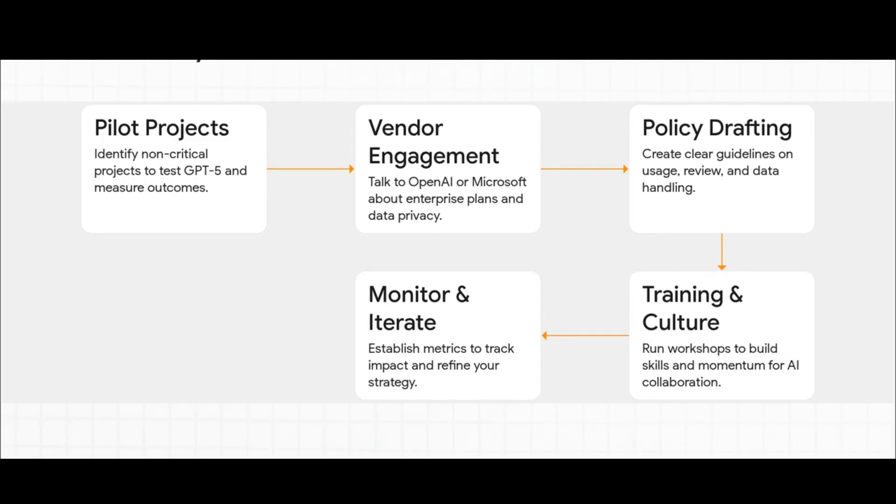So here's a simple five-step playbook for any executive who's looking to lead this charge. You start small with pilot projects to prove the value. Then, you engage vendors on security and privacy. From there, you draft policies so everybody's on the same page. Then, you invest in training to build the right skills and culture. And finally, you monitor and iterate, track your metrics, and then refine your strategy as you go.